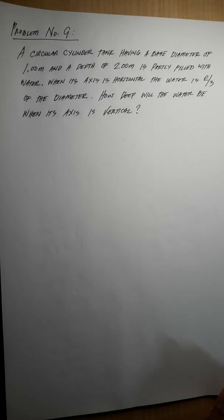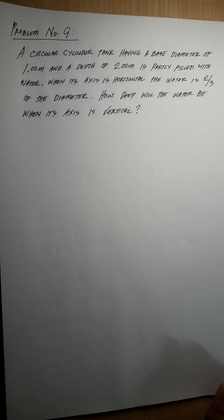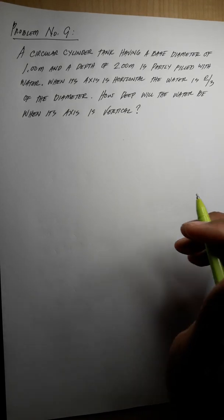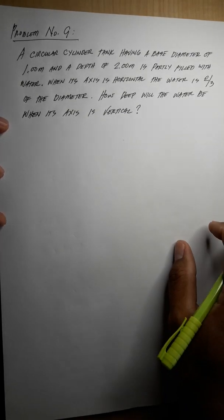Problem number nine: a circular cylinder tank has a base diameter of 1 meter and a depth of 2 meters. It is partly filled with water. When its axis is horizontal, the water is two-thirds of the diameter. How deep will the water be when its axis is vertical? First, we illustrate what is given. Here we have a cylinder in its horizontal position.